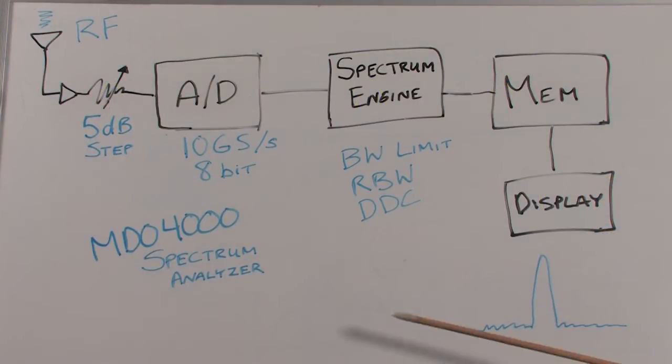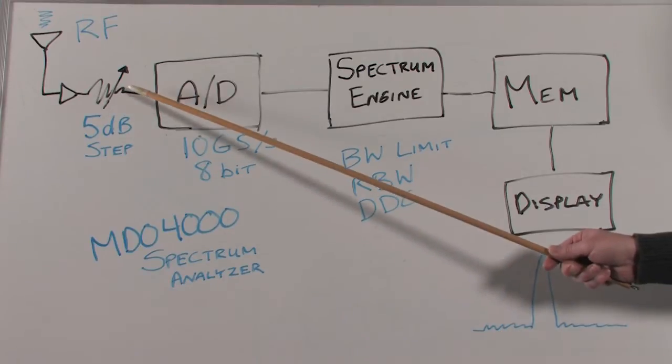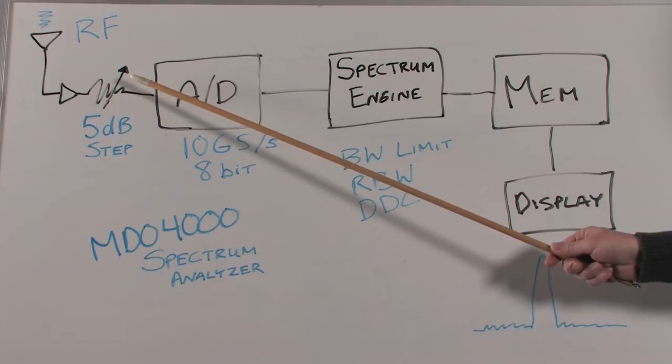Now take a look at the block diagram for the integrated spectrum analyzer in the MDO. Like other spectrum analyzers, there is an input amplifier and step attenuator specifically optimized for RF measurements.